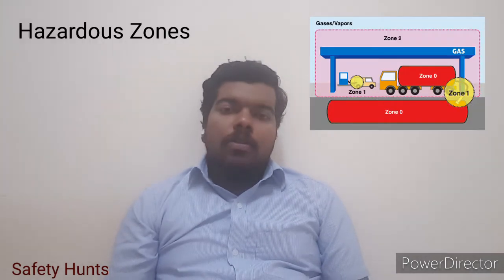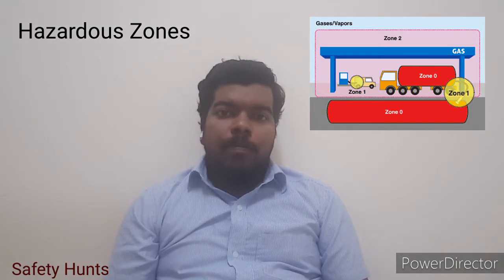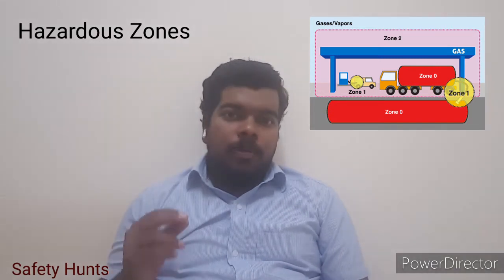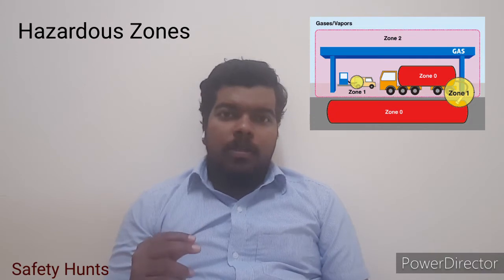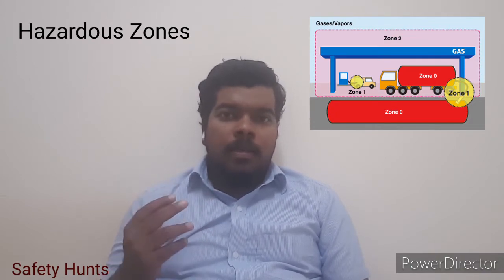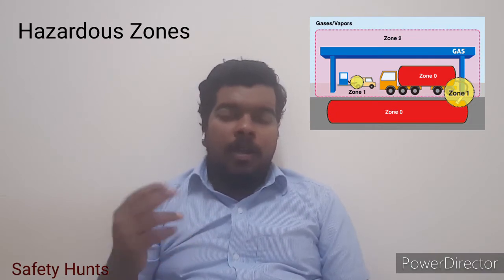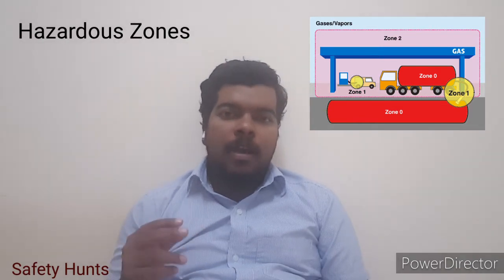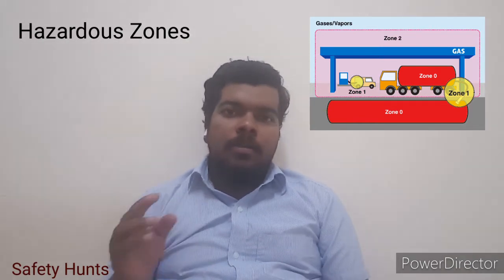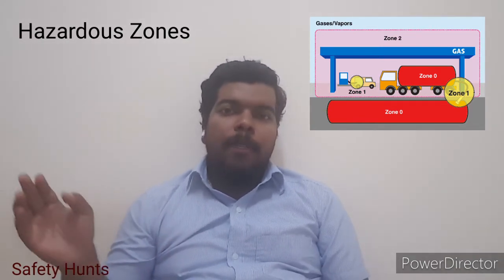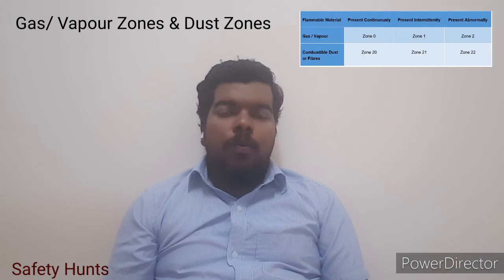Hazardous areas are classified into zones. The basic concept behind the zone is that the duration and frequencies of hazardous substance — the flammable and explosive substance present in air — depends on how we classify the zones. Zones are classified into two major categories: gas and vapour zones, and dust zones.